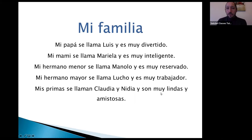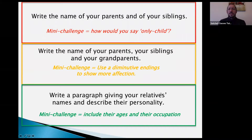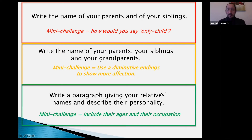As you can see, I've included some words that were not in the previous slides, meaning there are many more words we can use to describe our relatives. What I'm going to ask you to do is write the name of your parents and siblings on a piece of paper, your phone, or your laptop. If you want to be more adventurous, write the name of your parents, siblings, and grandparents. Your mini challenge is to use a diminutive ending to show more affection — instead of 'prima', say 'primita'. Or, if you want to take a huge risk, write a paragraph giving your relatives' names and describing their personality, including their ages and occupation.